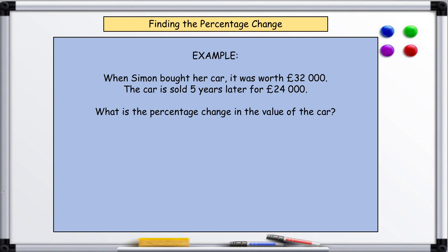When Simon bought his car, it was worth £32,000. The car is sold five years later for £24,000. What is the percentage change in the value of the car? So what we have to do is divide the new total by the original total.